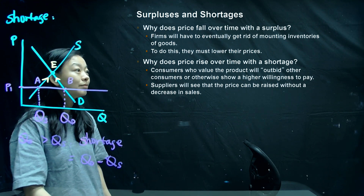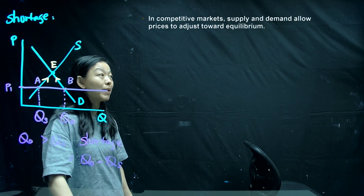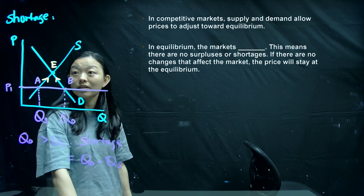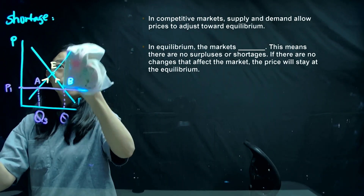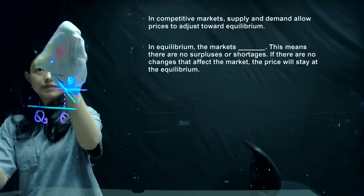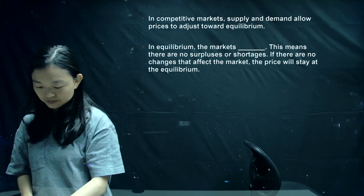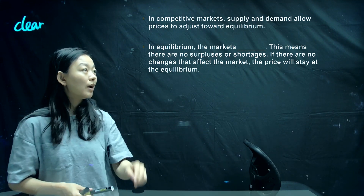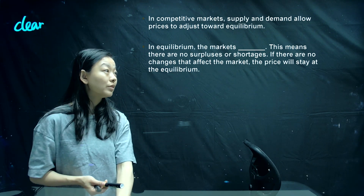Only when the market reaches the equilibrium point will the market be stable. In a competitive market — especially a perfectly competitive market — we say the market clears. The market clears when it reaches equilibrium, meaning there is no shortage and no surplus.